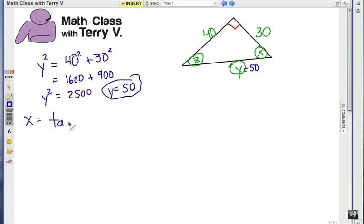the missing angle X is the inverse tangent. Remember, we use the inverse function to find missing angles, and the tangent is opposite over adjacent. So from angle X, opposite is 40, 30 is the adjacent, 40 over 30. Alright, so that'll be the inverse tangent of 1.3333, and that'll give me my answer of about 53 degrees, rounded. Alright, so that's what X is gonna be, 53 degrees.